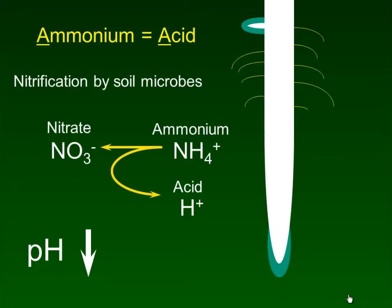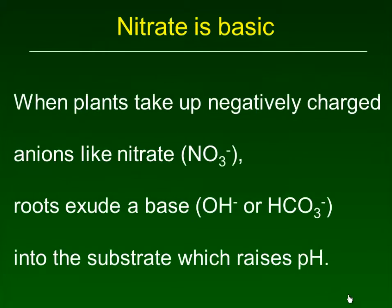There's also another process going on in the soil by microbes called nitrification. That converts ammonium into nitrate, and in the process it produces an acid, so pH goes down.